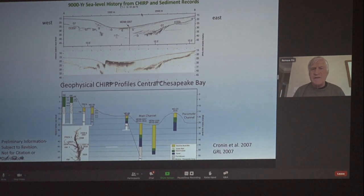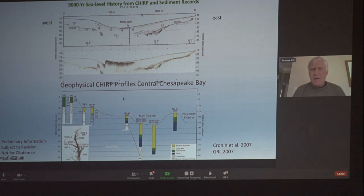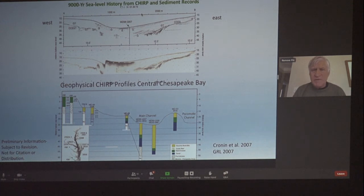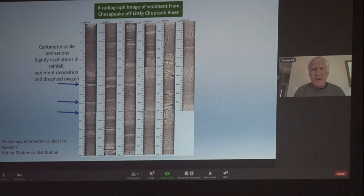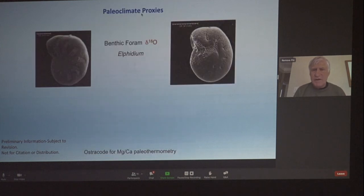You can't do this without good geophysics, so I have to give a shout-out to Peter Vogt of the Naval Research Lab, who did the geophysics in order to help us site the core locations in the channel of the bay. So we have a lot of mud from Chesapeake Bay and a lot of geophysical context for this work. If you look at the radiograph done by the Maryland Geological Survey, you can see fantastic signals in the sediments reflecting oscillations in rainfall and dissolved oxygen — a fantastically high-resolution record of the history of the bay.